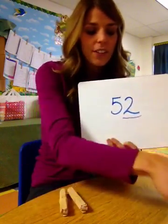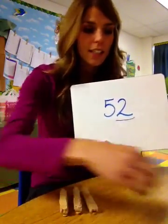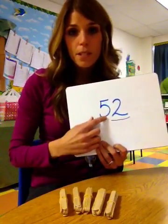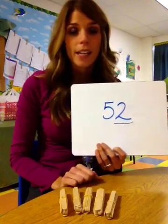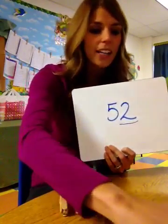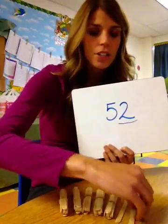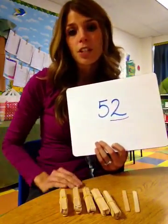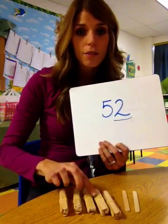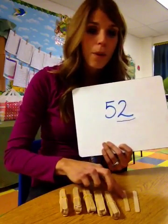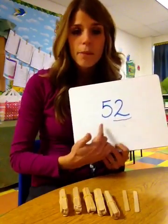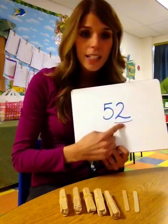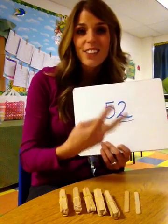One, two, three, four, five — five groups of ten. And how many ones do I need? Two, that's right. I need two ones, one, two. So if you can see here, this is my number 52: ten, twenty, thirty, forty, fifty, fifty-one, fifty-two. So let's take a look at this number again. What does this two mean? It represents the number two. It means there are two ones.